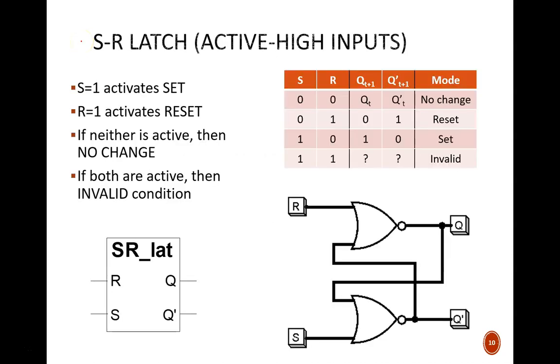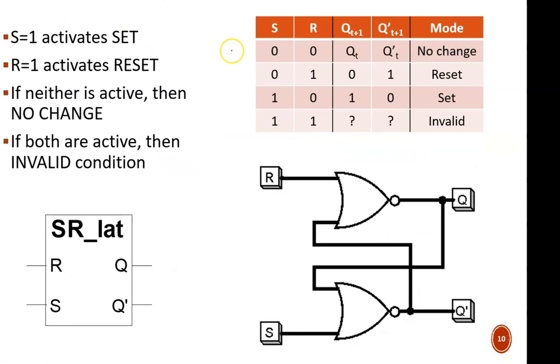Here we see more details on an SR latch with active high inputs. The behavior is summarized by this function table. Note that I am careful to not call this a truth table. A truth table should be used for combinational circuits, where the values are just zeros or ones, and I suppose the occasional don't care X. This function table does have zeros and ones, but also something else in this top row.